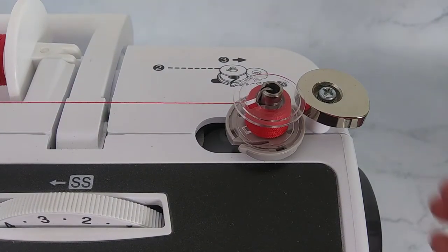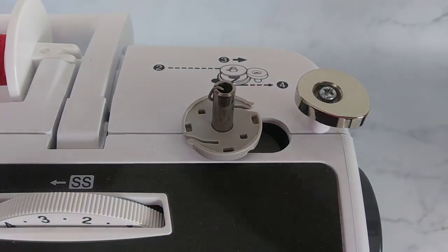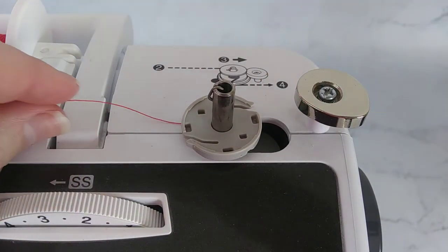And after we've got as much thread as we need, we just slide it back over, pull it off, and cut the thread.